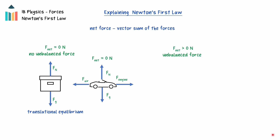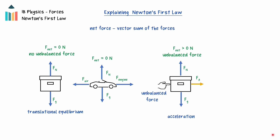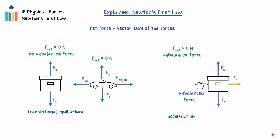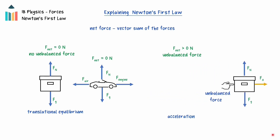If the net force acting on an object is not zero, then there is an unbalanced force, and the object will accelerate in the direction of the unbalanced force. This is the focus of Newton's second law, which is explored in the next video.